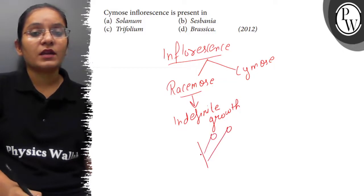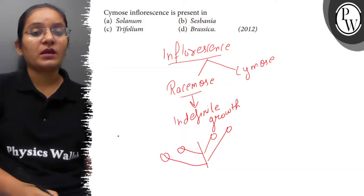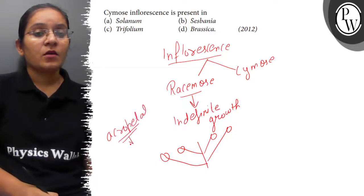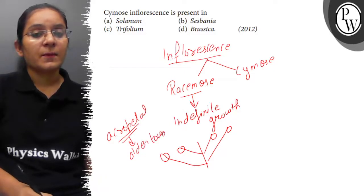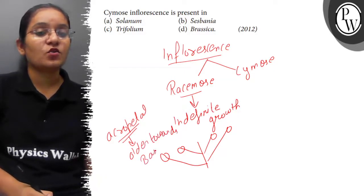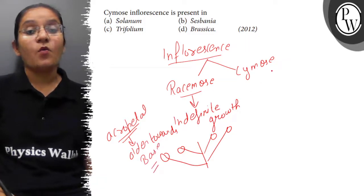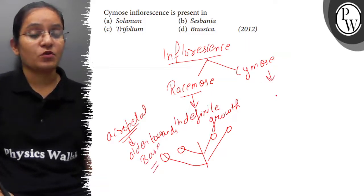The flowers are born on lateral branches in an acropetal succession. Acropetal order means older towards base, old flower towards base and young towards apex.